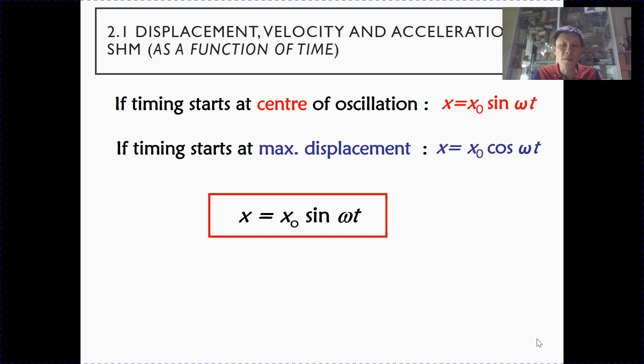So the general form of such equation would be x0 represents the amplitude. Omega is the angular frequency, and t is the time. If you recall from the definition of angular frequency, angular frequency is 2π over the period.